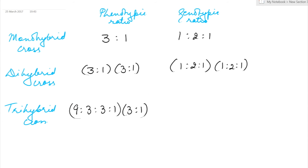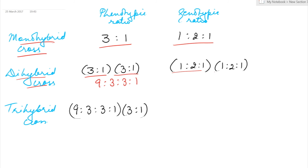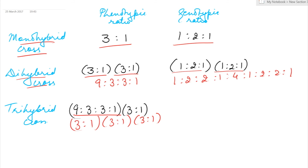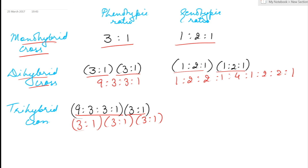Finally, the monohybrid phenotypic ratio is 3:1 and the genotypic ratio is 1:2:1, while the dihybrid phenotypic ratio for each gene is 3:1 × 3:1, which becomes 9:3:3:1. Similarly, for each gene the genotypic ratio is 1:2:1 × 1:2:1, which gives the full dihybrid genotypic ratio. In case of a trihybrid cross, you can take 3:1 × 3:1 × 3:1, or 9:3:3:1 × 3:1, giving 27:9:9:3:9:3:3:1.